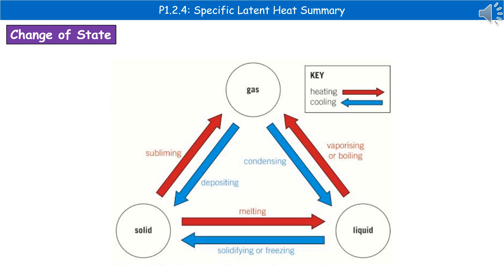is just the change of states and the names of the processes that cause those change in states. So we have three states of matter we need to concern ourselves with: solid, liquid and gas. And then we've got the six changes of state, so the processes that will occur to allow that change of state to happen.